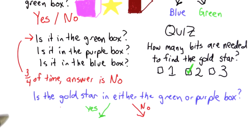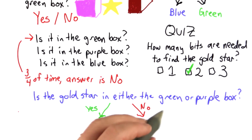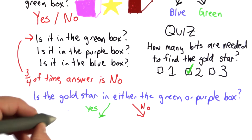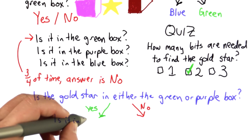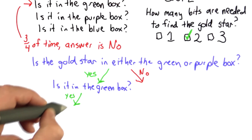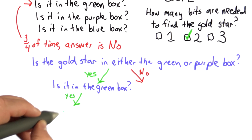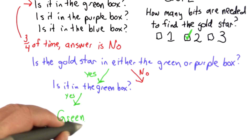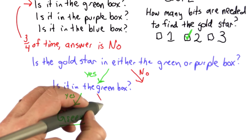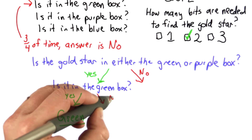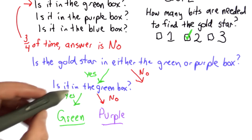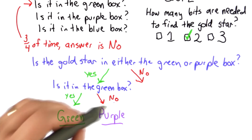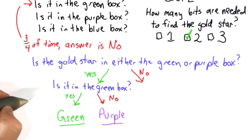If the answer is yes, we need to ask one more question to figure out which box it's in. That could be: is it in the green box? If the answer is yes, we know it's in the green box. If the answer is no, then we know it's in the purple box. We only needed two questions to get to the right box.